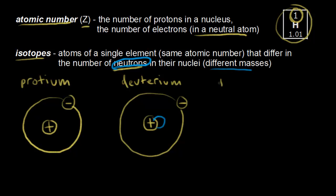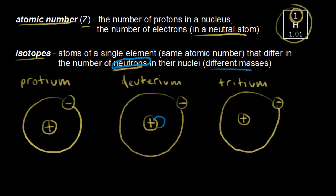Finally, the last isotope of hydrogen is tritium. Tritium has one proton in the nucleus and one electron outside the nucleus. It differs in the number of neutrons — tritium has two neutrons in the nucleus. So those are the three isotopes of hydrogen.